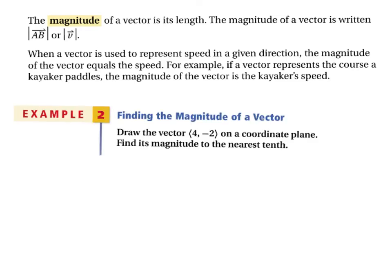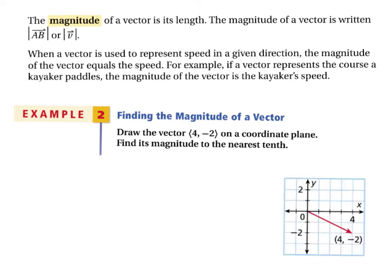In example 2, draw the vector ⟨4, −2⟩ on a coordinate plane and find its magnitude to the nearest tenth. Here 4 is the horizontal change and −2 is the vertical change. Since we don't know the initial point, we use (0, 0) — distance is the same regardless of starting point. We go right 4, down 2, then use the distance formula.